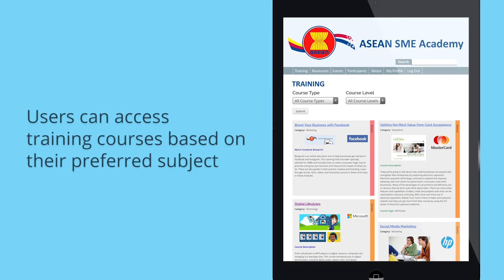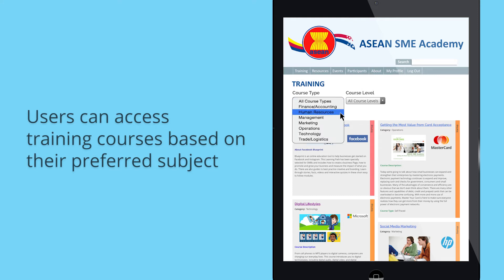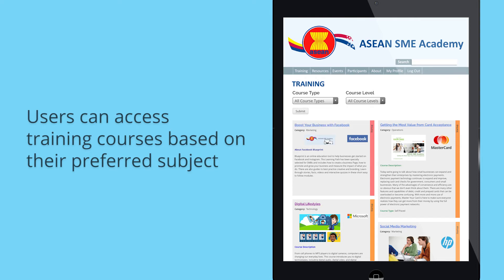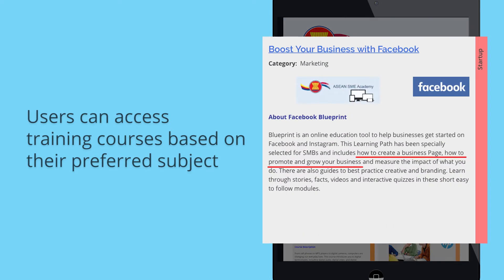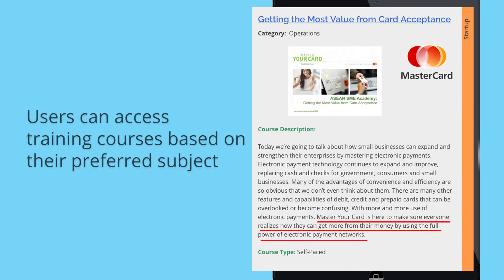Under the training tab, registered members can access training courses covering a variety of subjects. The drop-down menu on the types of courses provides you with a variety of subjects on finance and accounting, human resources, management, marketing, operations, technology, and trade and logistics. Under each course, members will find a brief description as well as a brief explanation of how each course can benefit your business.